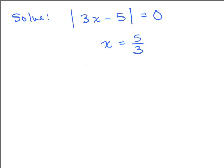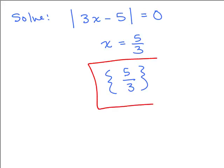So 5 thirds is the solution. We can write it in braces as a solution set. The next video will go over a different kind of problem with absolute value.